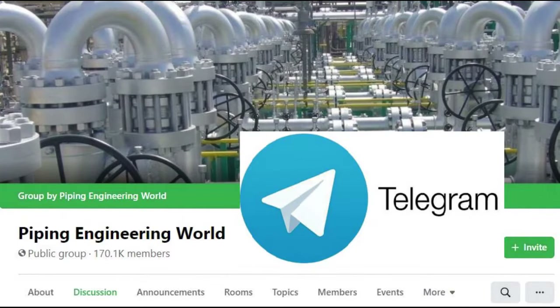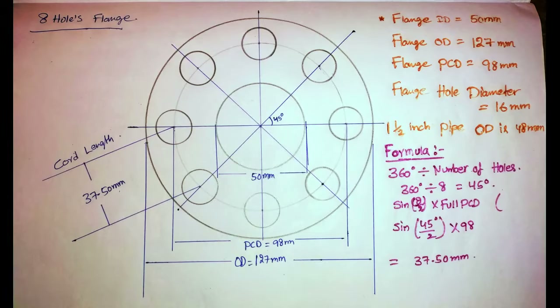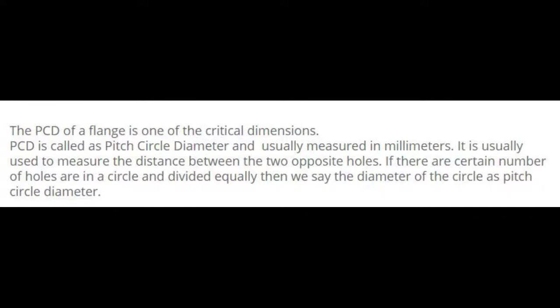Now let's start the video. What is PCD? PCD is one of the critical dimensions. PCD stands for Pitch Circle Diameter and is usually measured in millimeters. It is used to measure the distance between two opposite holes. If a certain number of holes are arranged in a circle and divided equally, then we call the diameter of that circle the Pitch Circle Diameter.